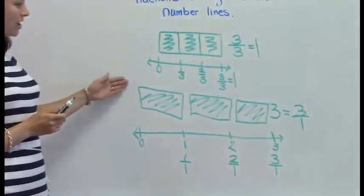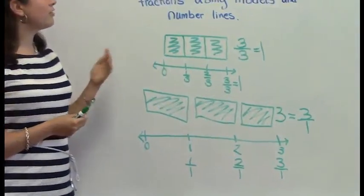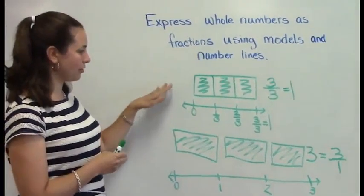So, this is how we can take our models and show it on a number line. These are two different ways of showing whole numbers using models and number lines.